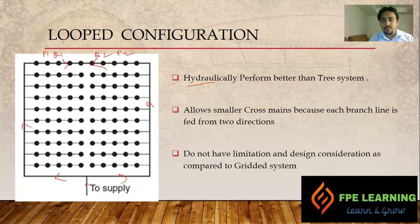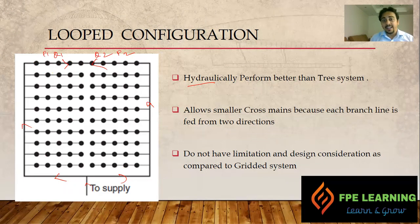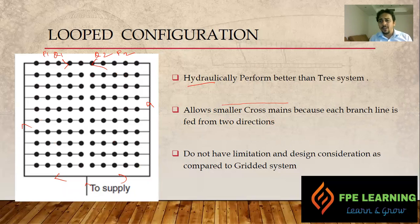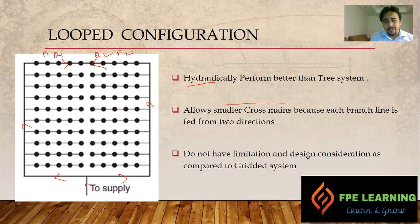This combined flow gives a better hydraulic advantage. So if you have warehouses or large areas, the looped configuration is one of the best solutions. It also allows us to choose smaller cross mains compared to the tree system, because we are getting water from two sides. This system has no limitation on system type — we can use it on wet, dry, deluge, and preaction systems.